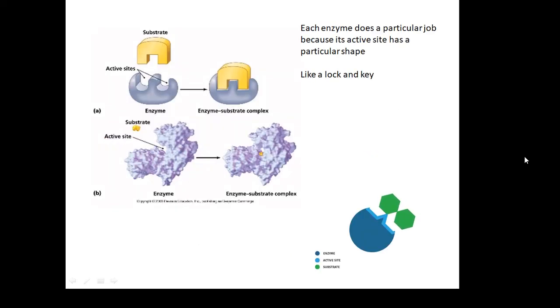Each enzyme does a particular job because its active site has a particular shape, like a lock and key. The substrate fits into the active site, and no other substrate will. So each enzyme does a particular job.